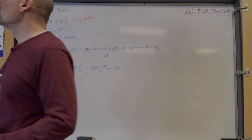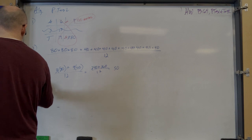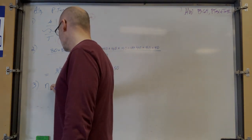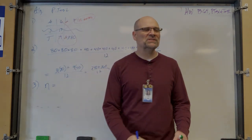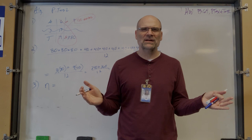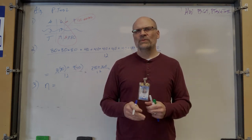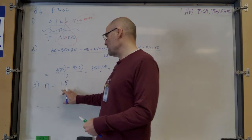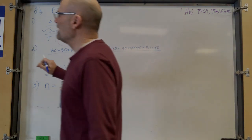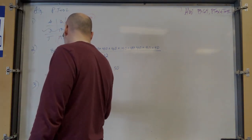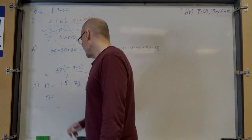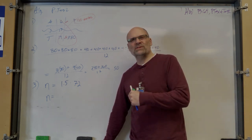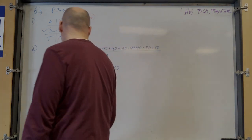Number three: just translate it, don't math it yet. 'What number is n?' translates to n equals 150% of 72. Percents are useless in mathematical calculations, so change it to a decimal. 150% as a decimal is 1.5. So it's 1.5 times 72. In my head: 72 plus 36 — that's 1 times 72, and 0.5 times 72 is 36. 72 plus 36 is 108.